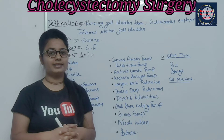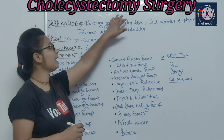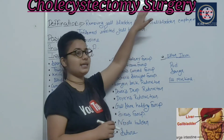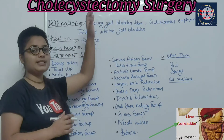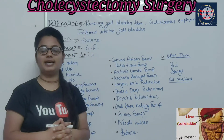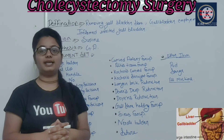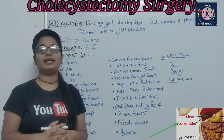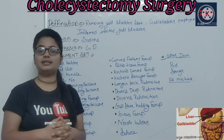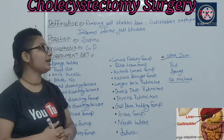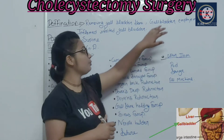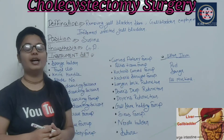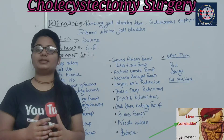Let's start. We know about abdominal cholecystectomy surgery. Cholecystectomy surgery means gallbladder surgery. Today I will tell you what gallbladder surgery is — it is called cholecystectomy surgery.